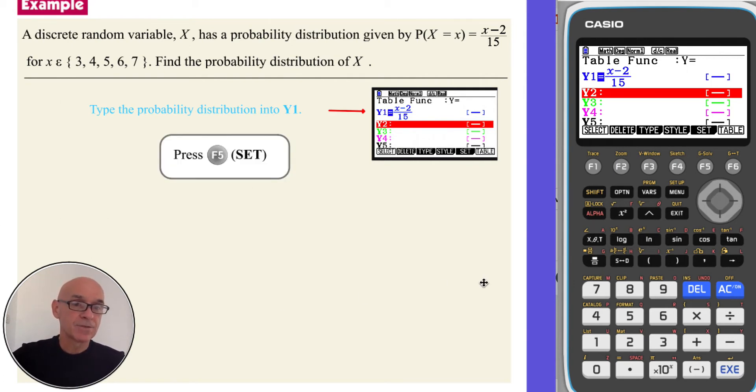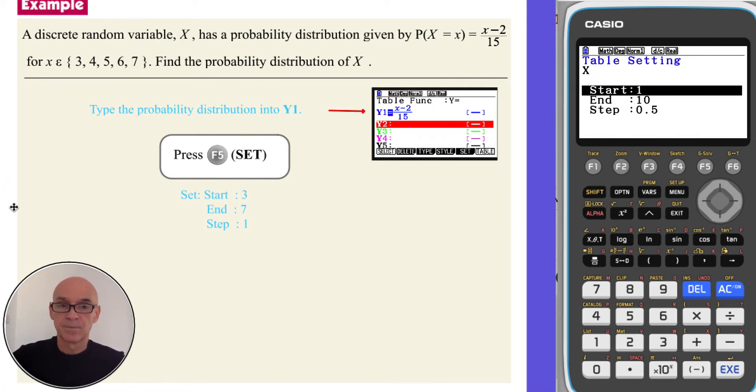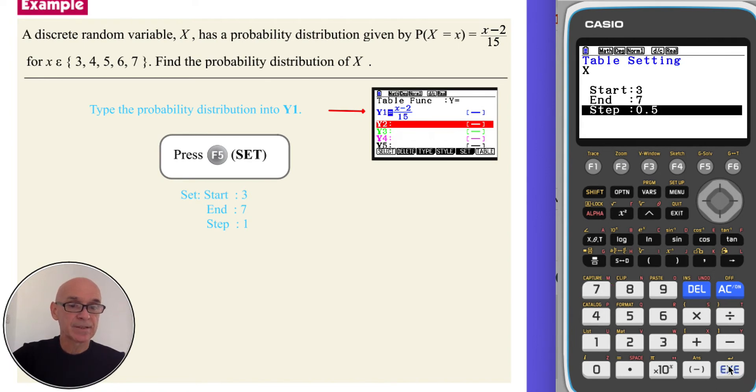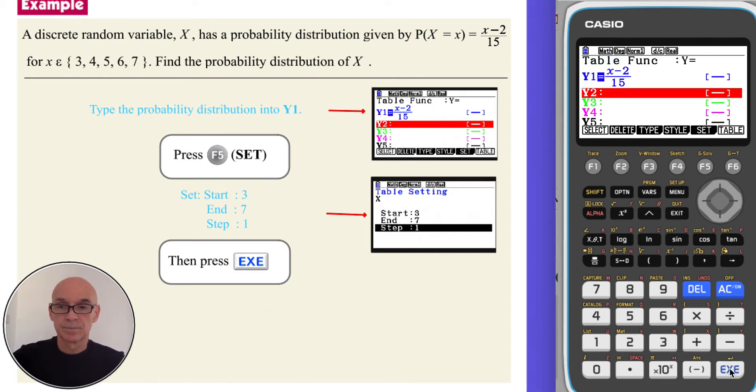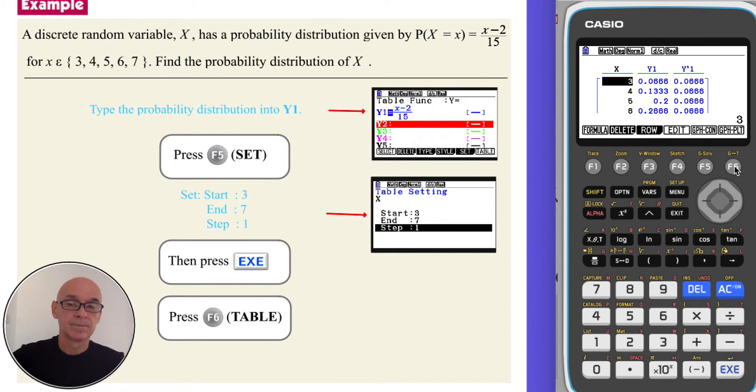I've shown you the diagram there. Then if you press F5 to set the table, and set a start value of 3, the first value of X, and an end value of 7, the last value of X, and step 1, the increment. As shown, you can enter those.